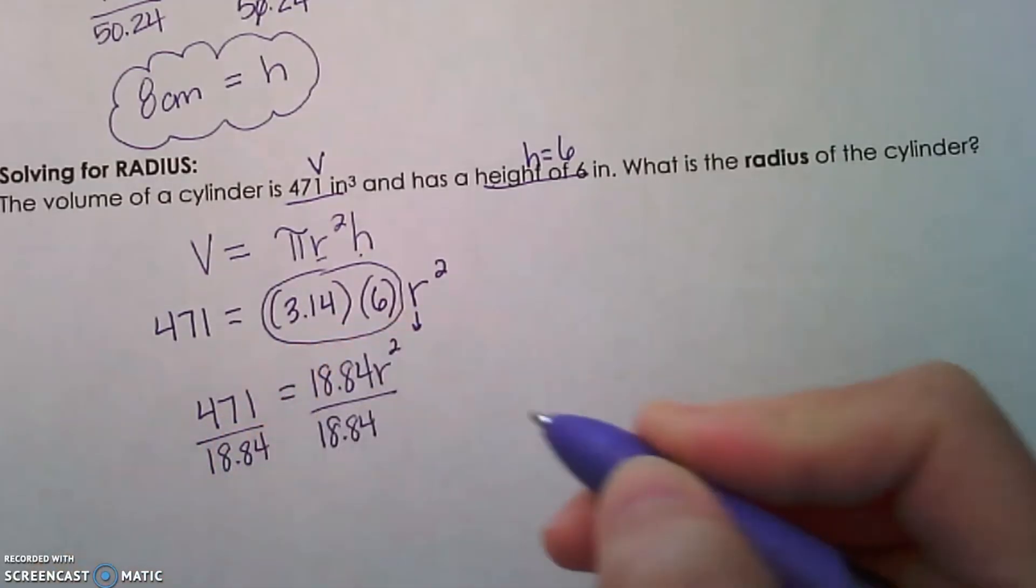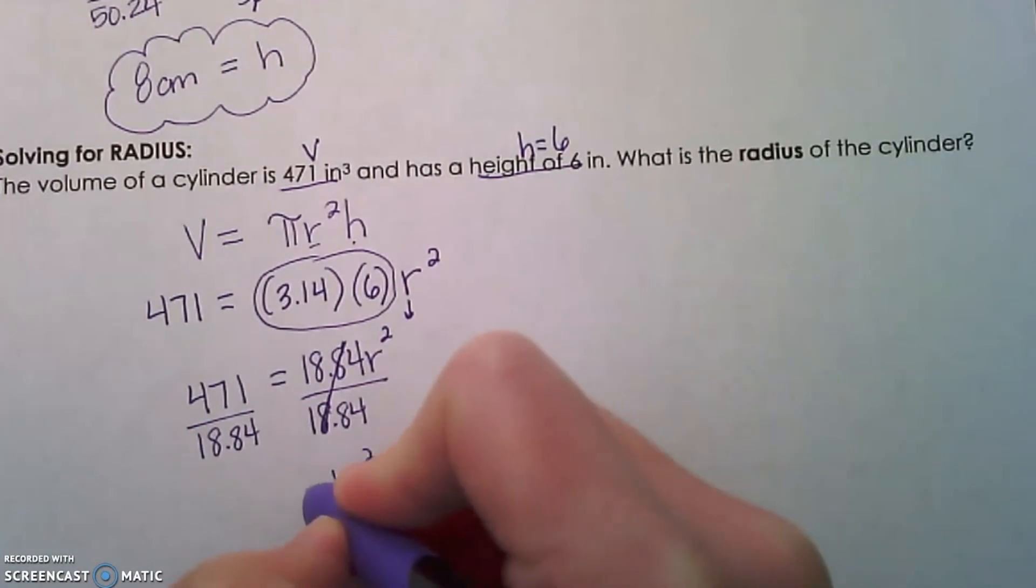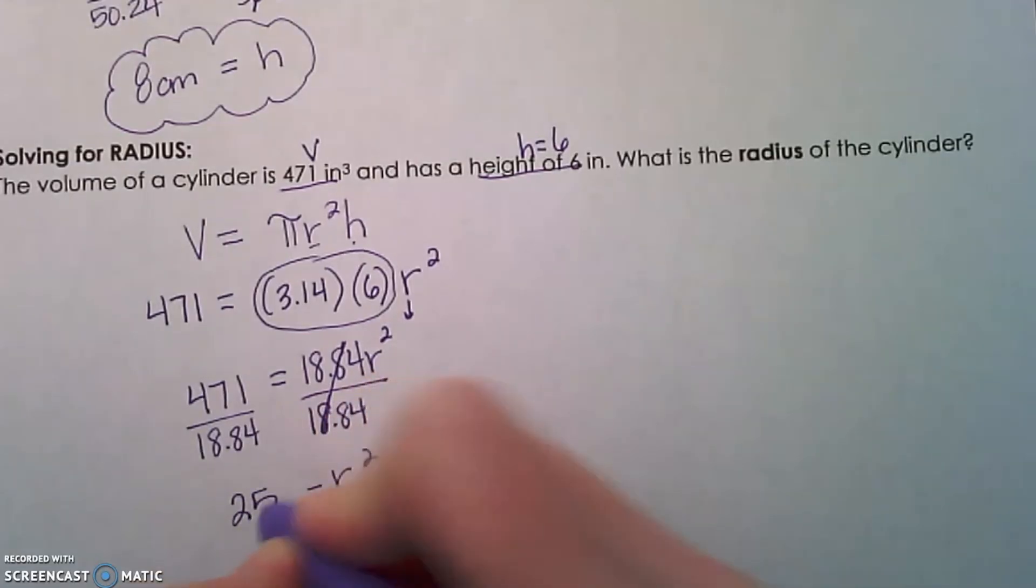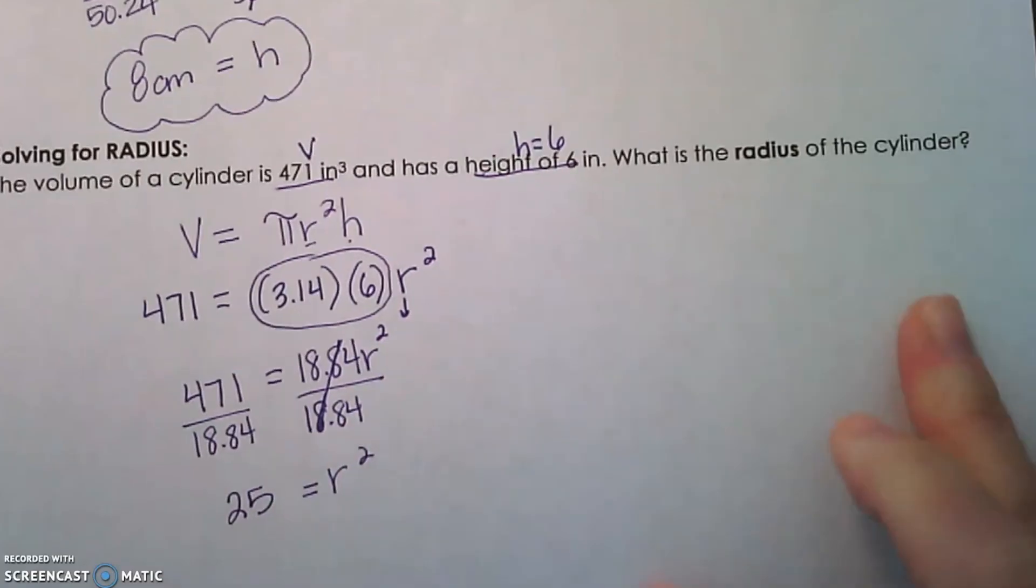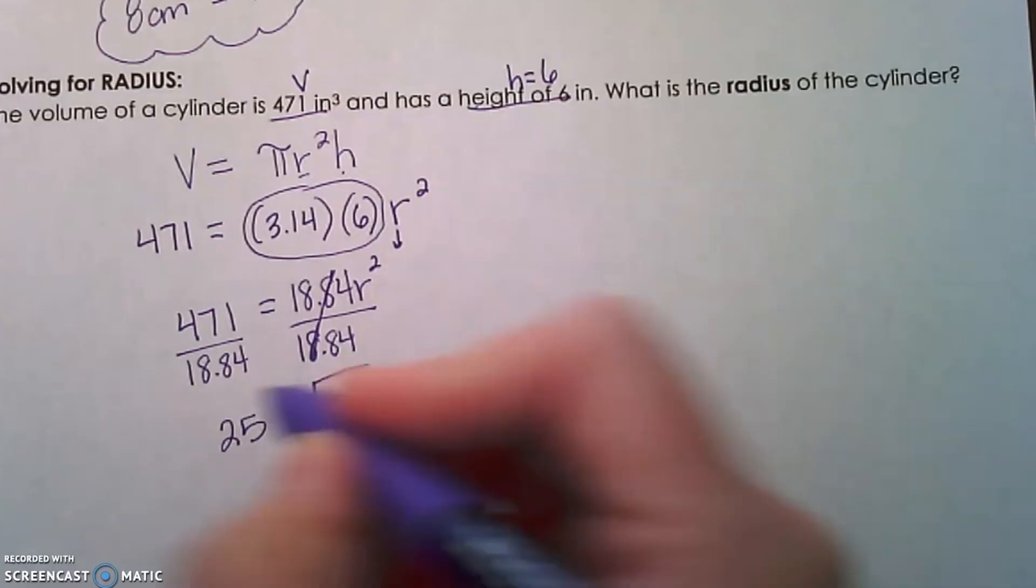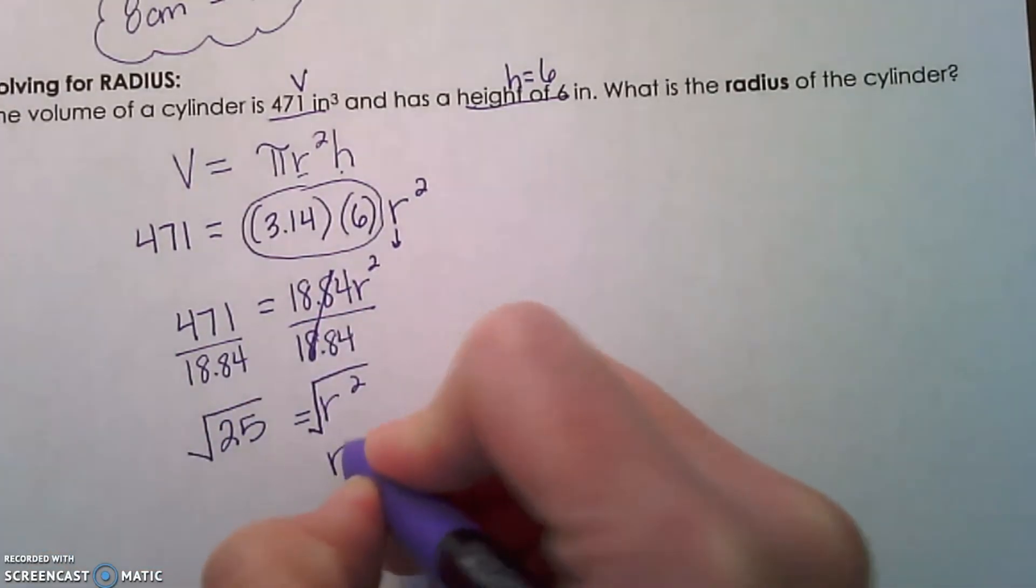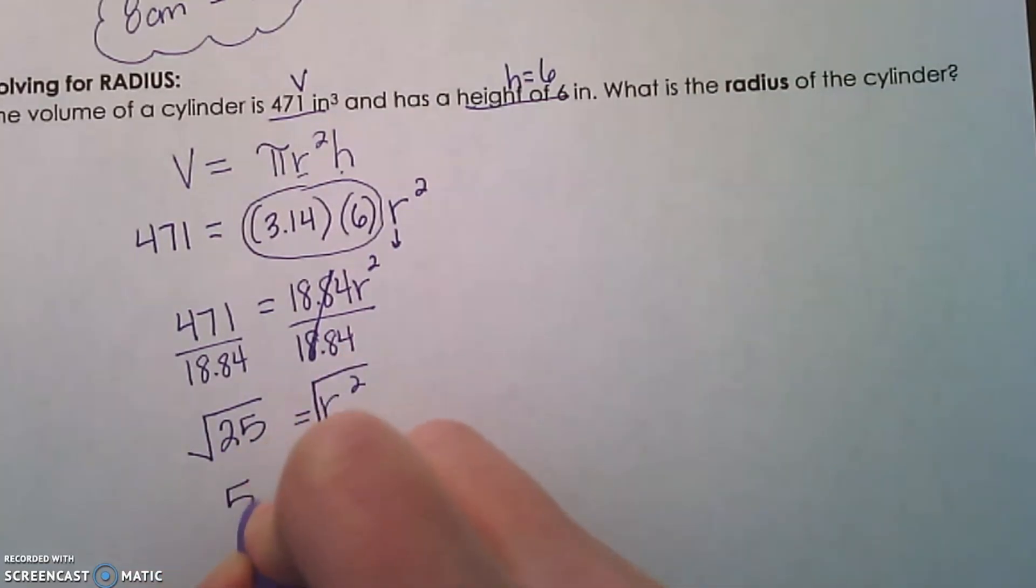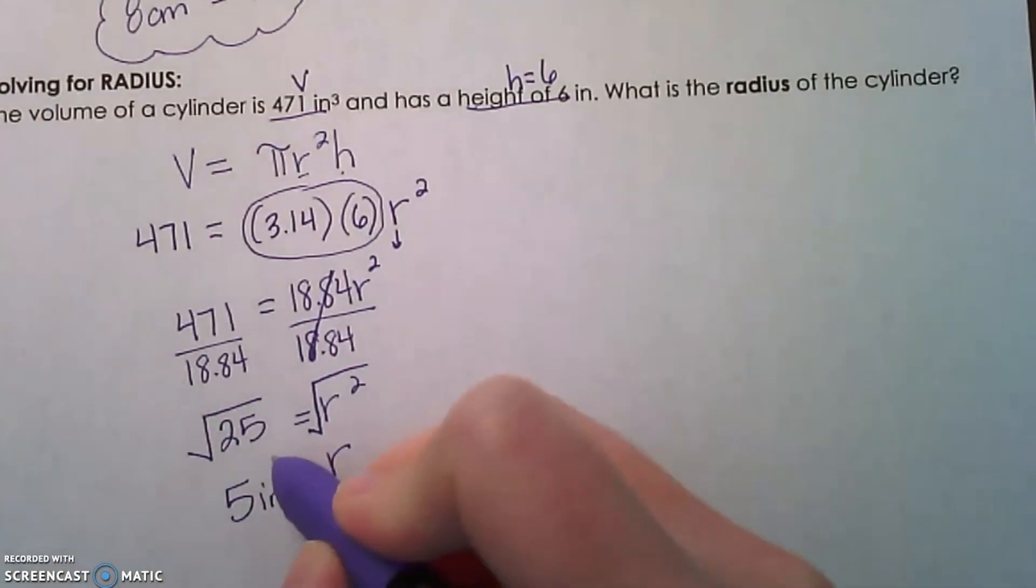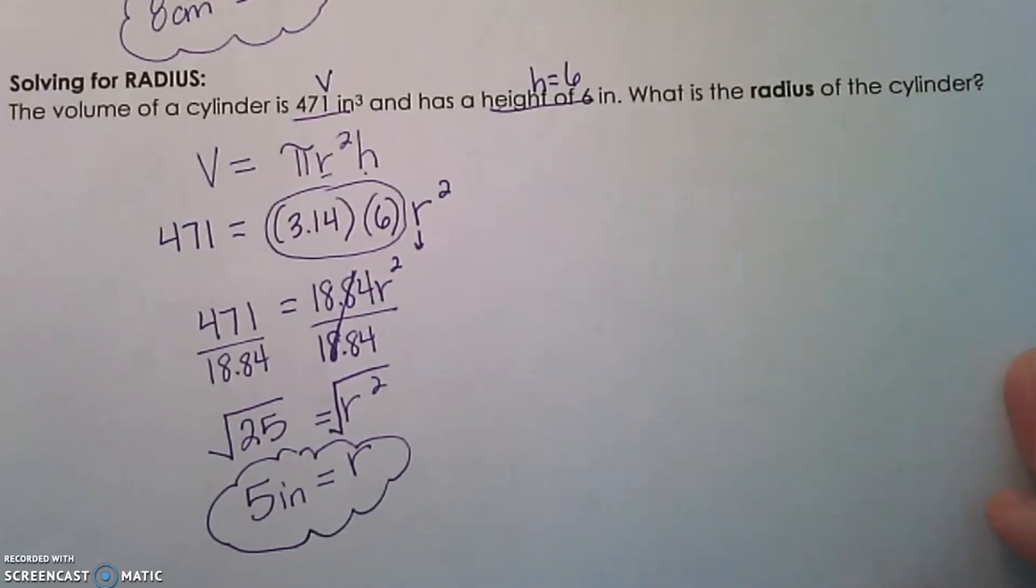Whatever we do on one side of the equation, we've got to do on the other side. Our 18.84s cancel out. We are left with r² = 25. We are not finished. We need to know what r is, not r squared. So our final step would be the inverse operation of r squared would be to take the square root. So we unsquare r squared and we get r equals the square root of 25 is 5. Our units of measure on the radius is going to be 5 inches. That is how we isolate variables other than volume using a volume measurement.